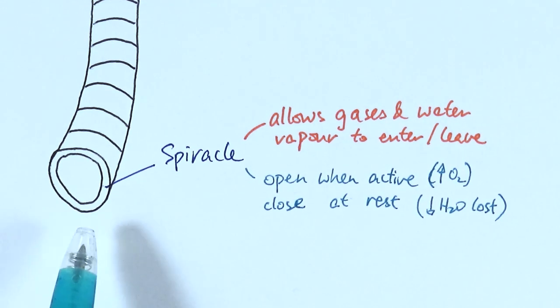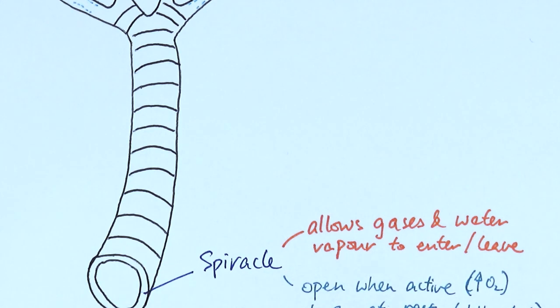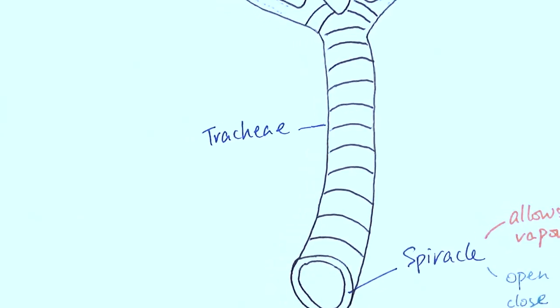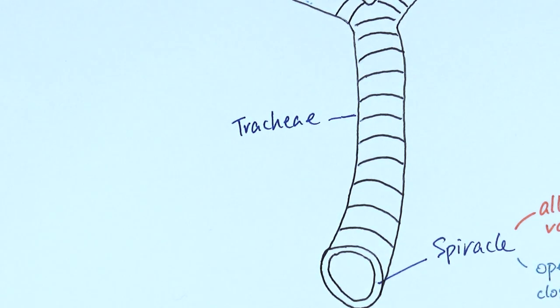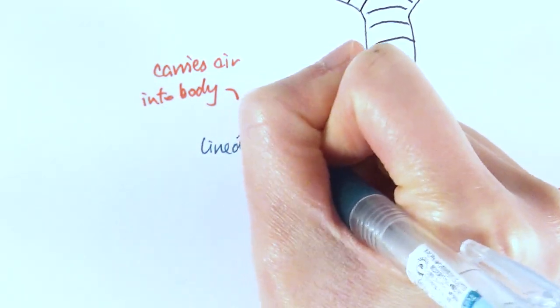Once the air goes in through the spiracle, then it will go up this main tube and this main tube is called the trachea. So the trachea, as the name kind of gives it away, is basically the trachea in the mammalian breathing system. So it is the main tube about one millimeter wide in terms of lumen. It's the main tube where the air actually goes into the body and also it is lined with a specific chemical which is chitin.